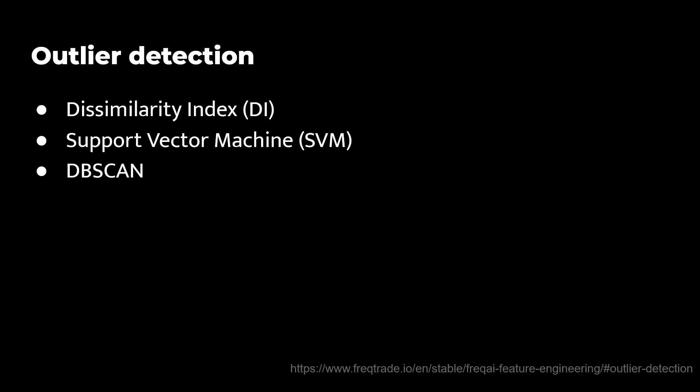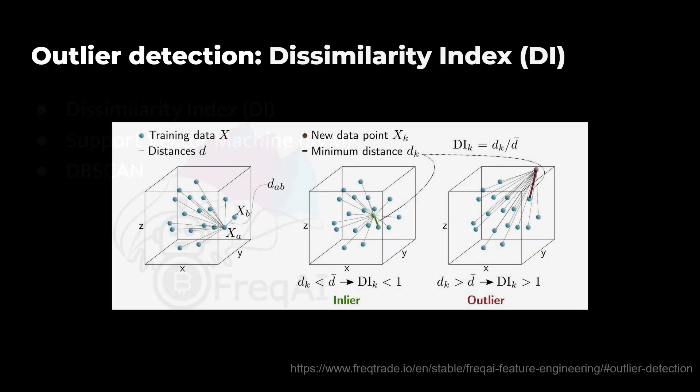Some of the methods Freq AI uses are dissimilarity index, support vector machines, and DBSCAN. The dissimilarity index in the example given on the FreqTrade website is about the dissimilarity on a 3D model. These indices are a common way to identify and remove outliers in those models, without going into too much details here. The model first calculates the average or maximum distance of the data points that already exist, which is called the threshold d. And then if a new data point enters the data set, there will be a calculation to determine if this new point has a distance that is shorter or longer than the average of this data set. If the new data point distance is bigger than d, and also bigger than 1, then there is sufficient evidence that the new data point is an outlier and will be filtered.